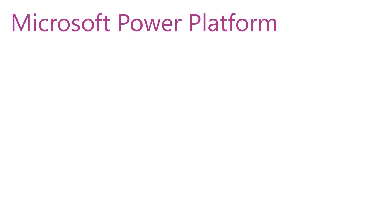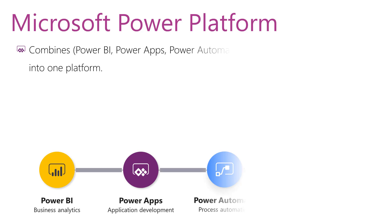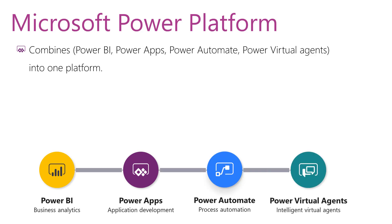We will start with a journey to Microsoft Power Platform. The Power Platform consists of four products: Power BI, PowerApps, Power Automate, and Power Virtual Agents. The Power Platform combines these products into one powerful business application platform.